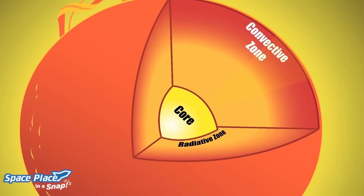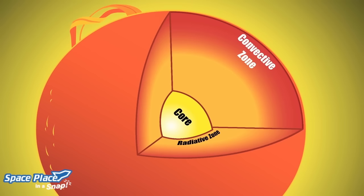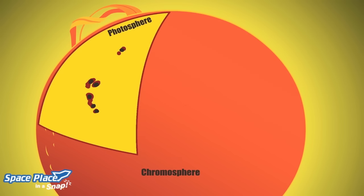The energy travels outward through a large area called the convective zone. Then it travels onward to the photosphere, where it emits heat, charged particles, and light.